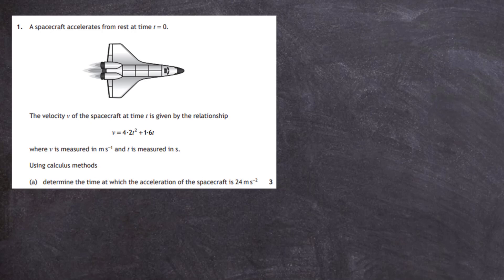The velocity v of the spacecraft at time t is given by the relationship v equals 4.2t squared plus 1.6t, where v is measured in meters per second and t is measured in seconds.